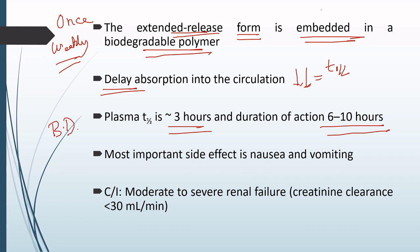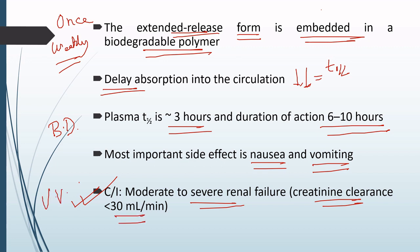The most important adverse effect of Exenatide is nausea and vomiting. Another very important point: Exenatide is contraindicated in patients with moderate to severe renal failure — that is, patients whose creatinine clearance is less than 30 ml per minute.